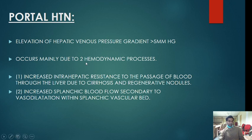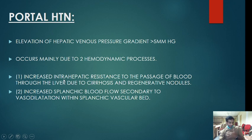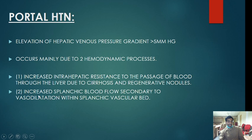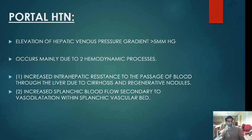Portal hypertension occurs due to two hemodynamic processes: first, increased intrahepatic resistance to blood passage through the liver due to cirrhosis and regenerative nodules — because the blood from the portal vein reaching the sinusoids cannot pass to the hepatic veins; second, increased splanchnic blood flow secondary to vasodilation, which leads to formation of varices and multiple collaterals.